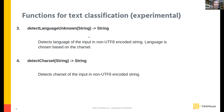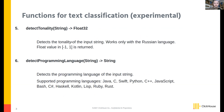If you don't know the charset of some bytes, there's a function to detect the charset and the most probable corresponding language. There's also detectTonality, which currently only works with Russian language and returns a float value from -1 to 1. Finally, detectProgrammingLanguage detects what programming language a text snippet is written in.